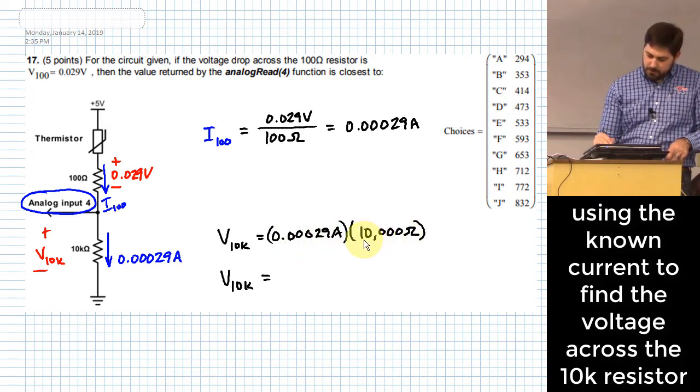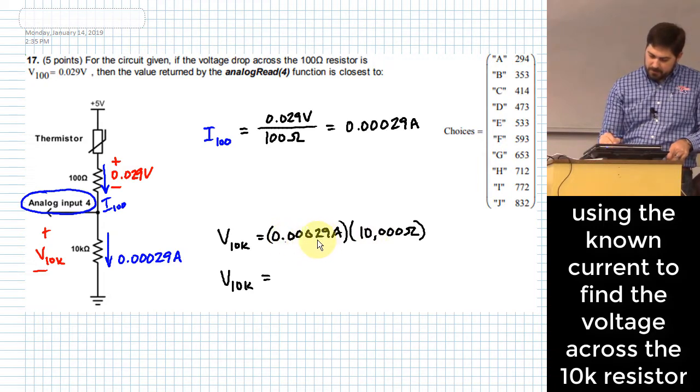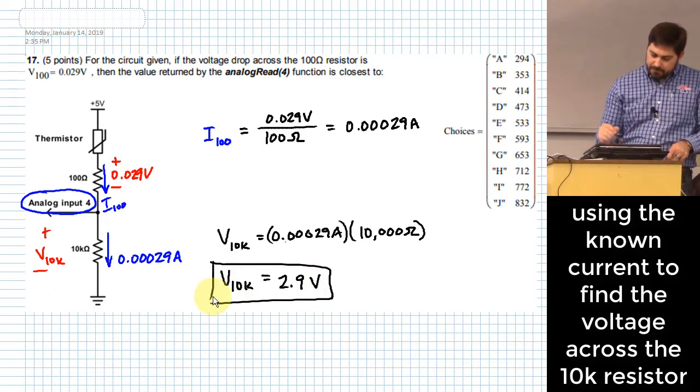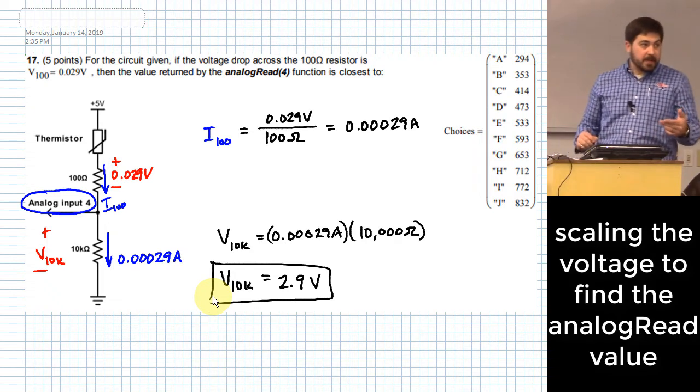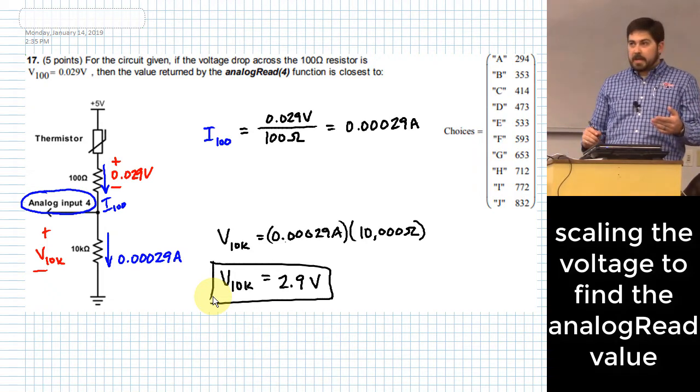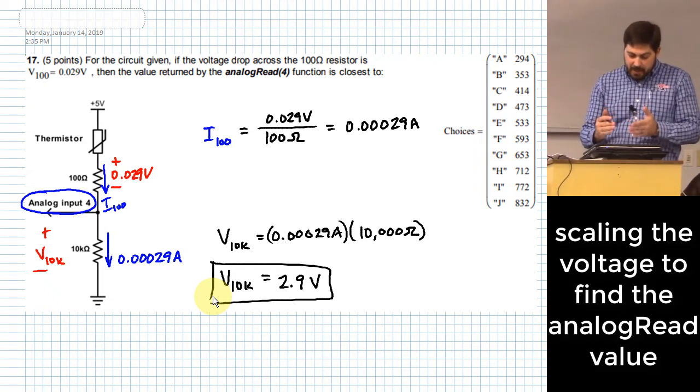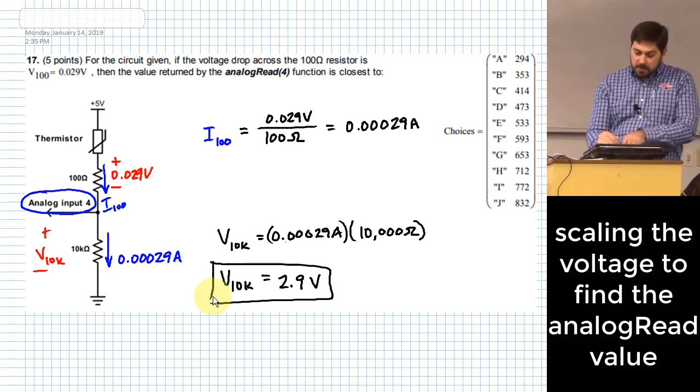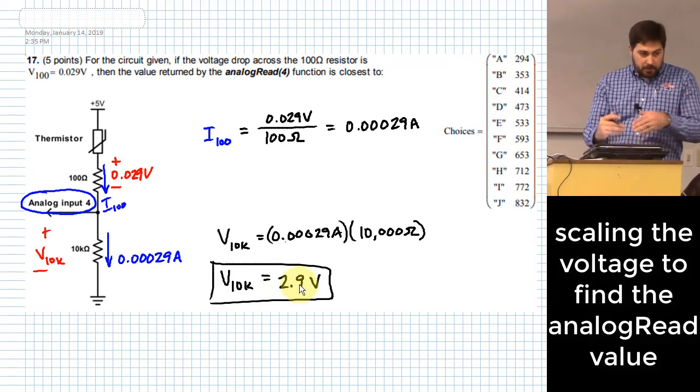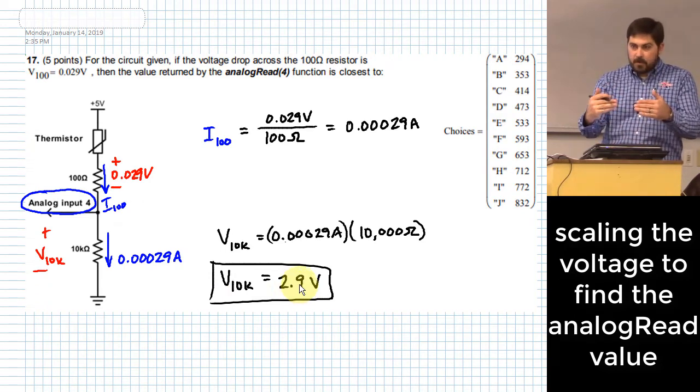One, two, three, four. So this would be 2.9 volts. But that is not what's going to be returned by an analog read because analog read basically gives you a value that's scaled from 0 to 1023 according to the voltages from 0 to 5 volts.